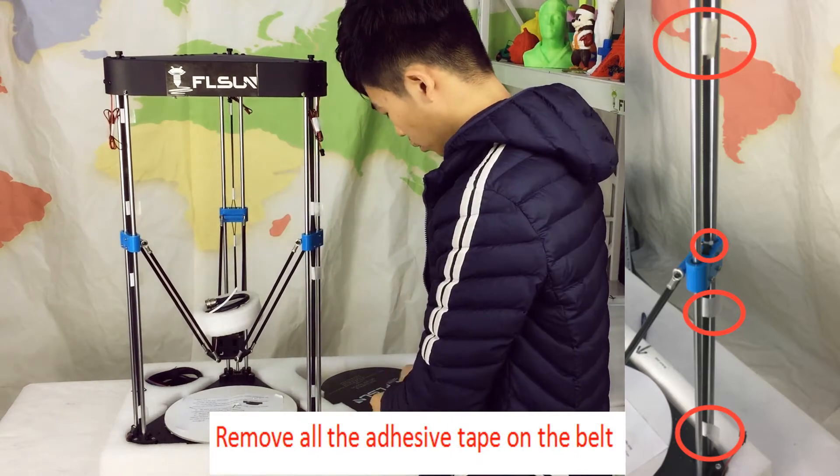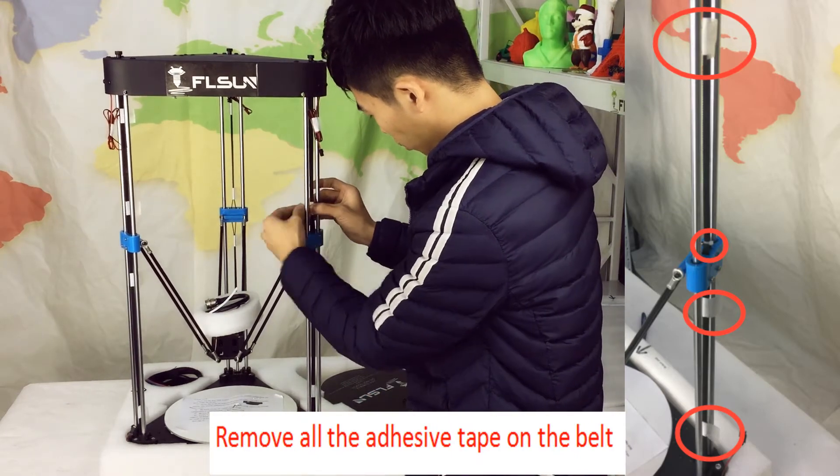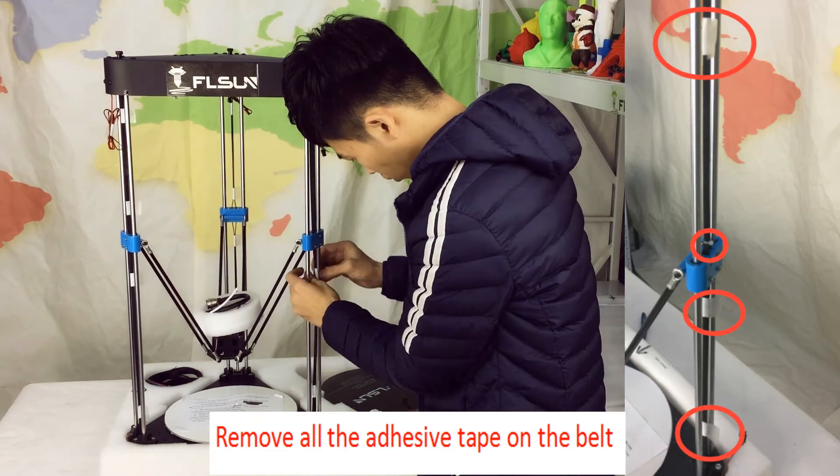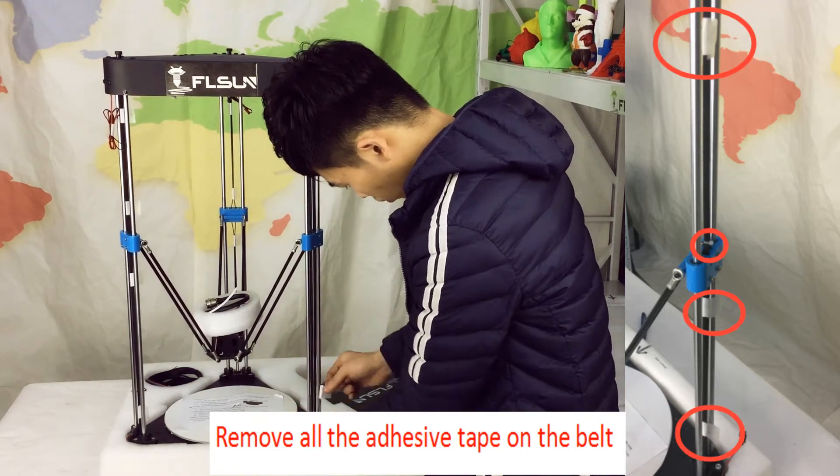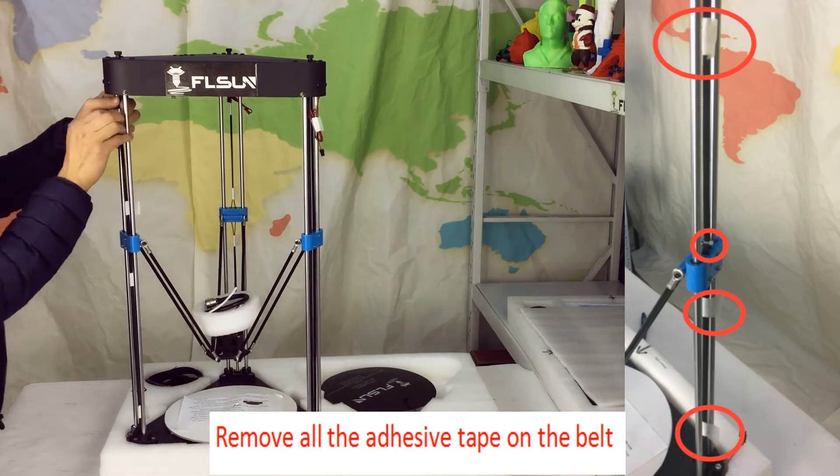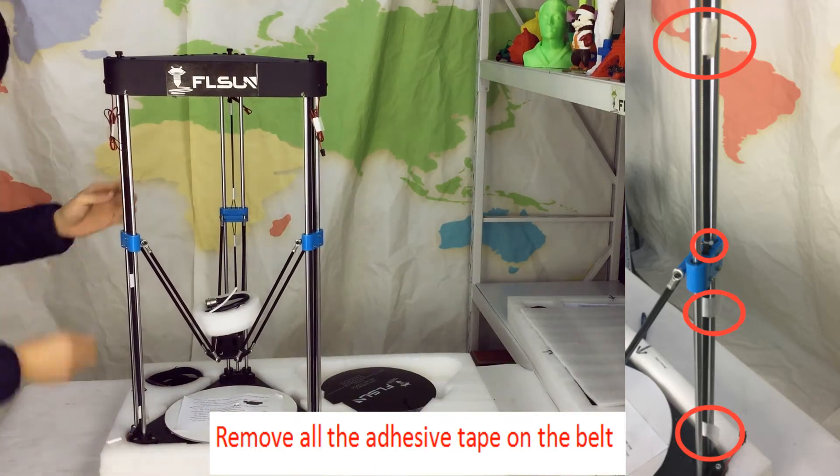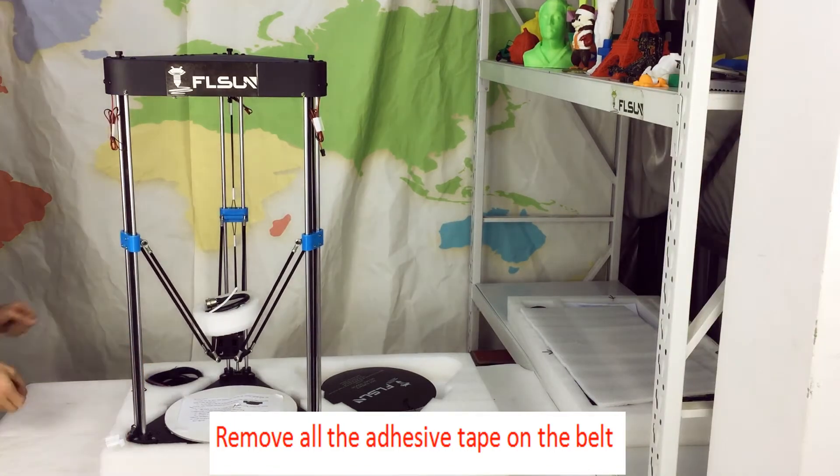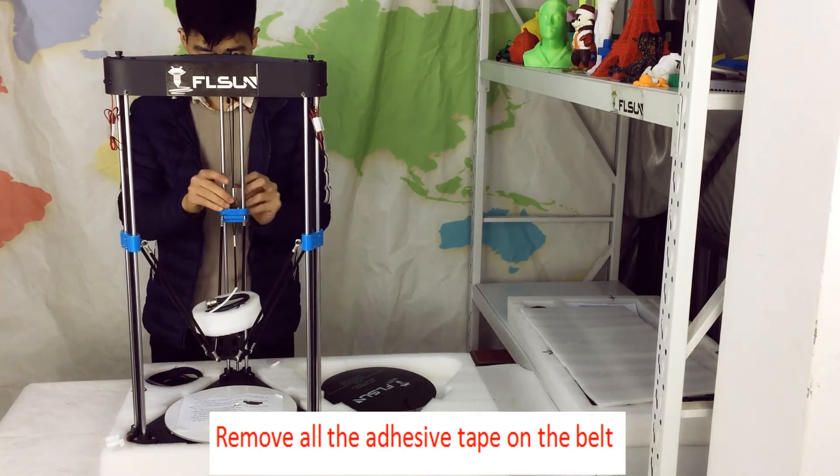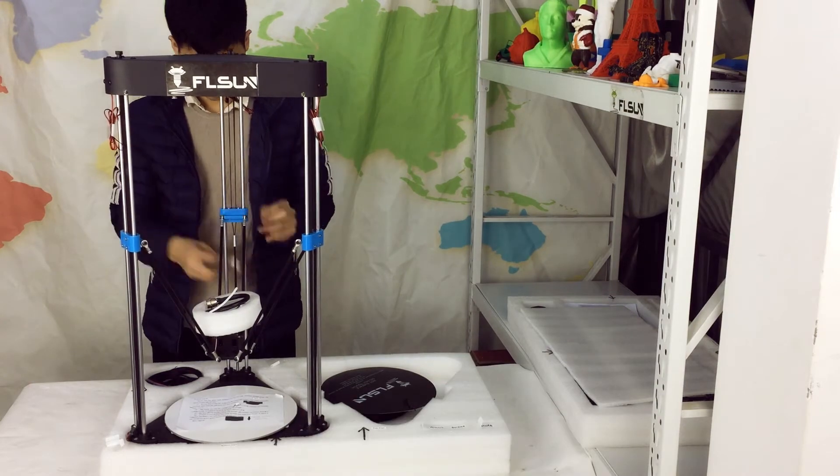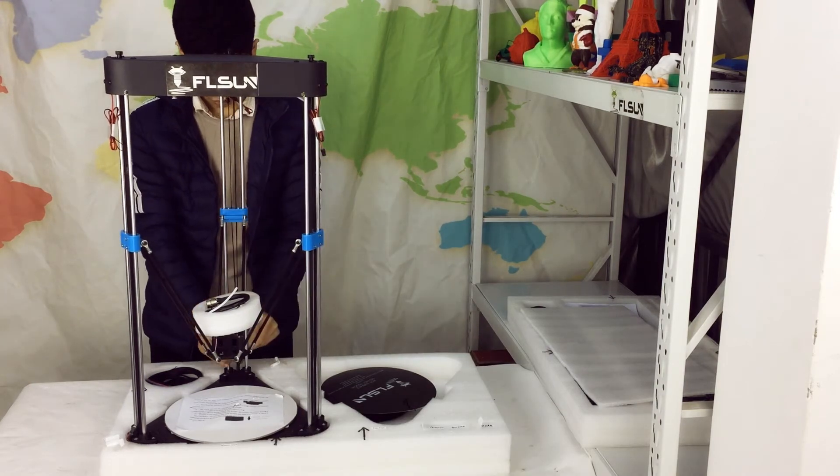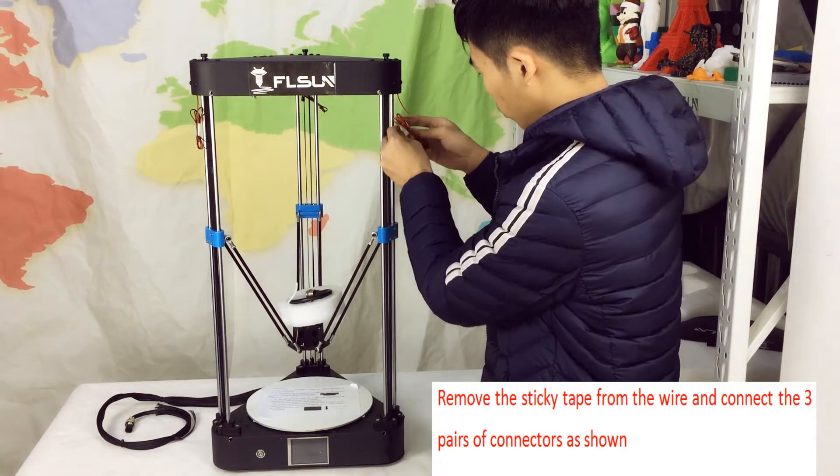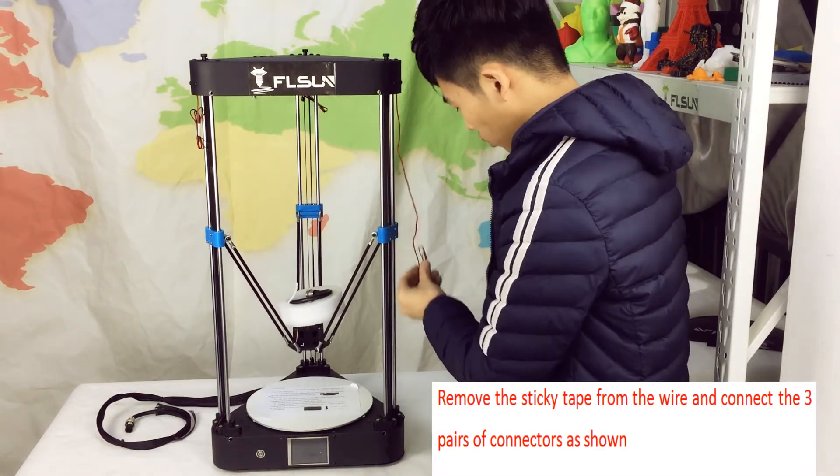Remove all the adhesive tape on the belt. Remove the sticky tape from the wire and connect the three pairs of connectors as shown.